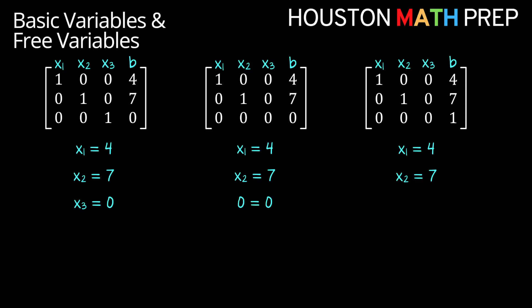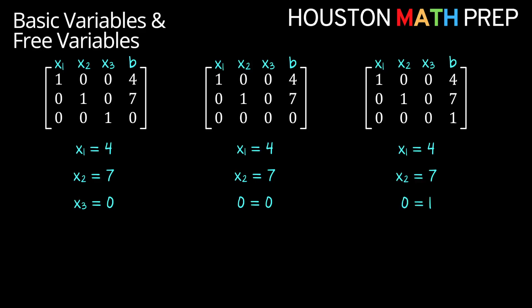The final row of our matrix in the middle gives us the equation 0 equals 0. This is certainly a true statement, but it doesn't really tell us anything about our final variable x3, so let's put a pin in that for a moment. Looking at the last row of our matrix on the right, we get a final equation of 0 equals 1. Something suspicious is going on with that statement — it's telling us that something is inconsistent about the information in this system.